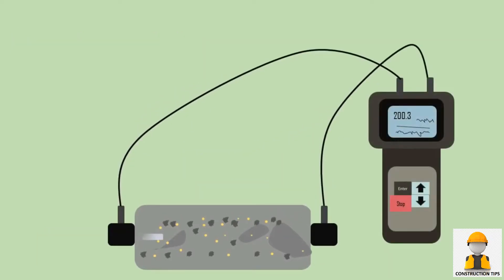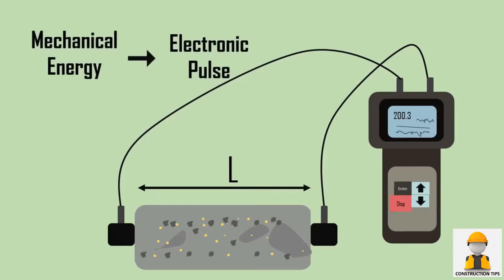Once the transducer is arranged, the ultrasonic pulse is produced by the transducer which is held in contact with one surface of the concrete member under test. After travelling a known path length L in the concrete, the pulse of vibrations is received at the other transducer, which converts mechanical energy into an electrical signal. This electrical energy is received by the electronic timing circuit present in the device, and the time for this travel T is displayed on the monitor.